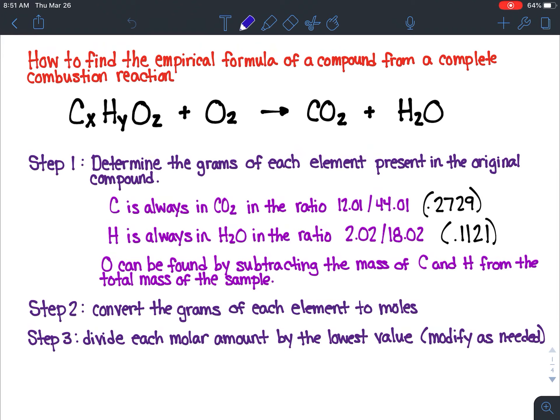The next thing we'll do is convert the grams of each element to moles and then divide each molar amount by the lowest value, modify it as needed, and write out our empirical formula. Very similar to the process we've done before. The only thing that's different about combustion reactions is that we have to determine our grams before we get started.